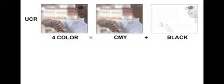As we see in this example, UCR primarily affects the neutral three-quarter tone and shadow areas of the image. The cyan, magenta, and yellow areas are reduced and replaced with black. Again, UCR should not affect colored areas, only neutral areas of the image.